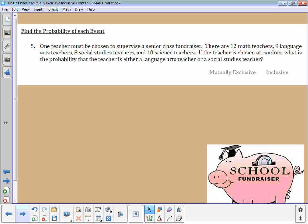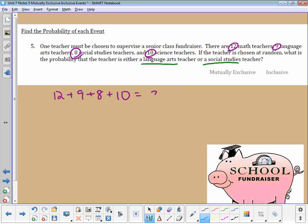Flipping to the back side, we're going to find the probability of all these events, but we also have to decide whether they're mutually exclusive or inclusive. In number 5, we're picking one teacher out of all those options. There's 12 math, 9 language arts, 8 social studies, and 10 science teachers. You're picking one teacher. What's the probability that it's either language arts or social studies? First thing I need to know is how many total teachers. 12, 9, 8, and 10. When I add up the total, I have 39. Now, if I'm picking one and I want to find out whether it's language arts or social studies, assuming teachers only teach one subject, which most of them do, these are going to be mutually exclusive events.